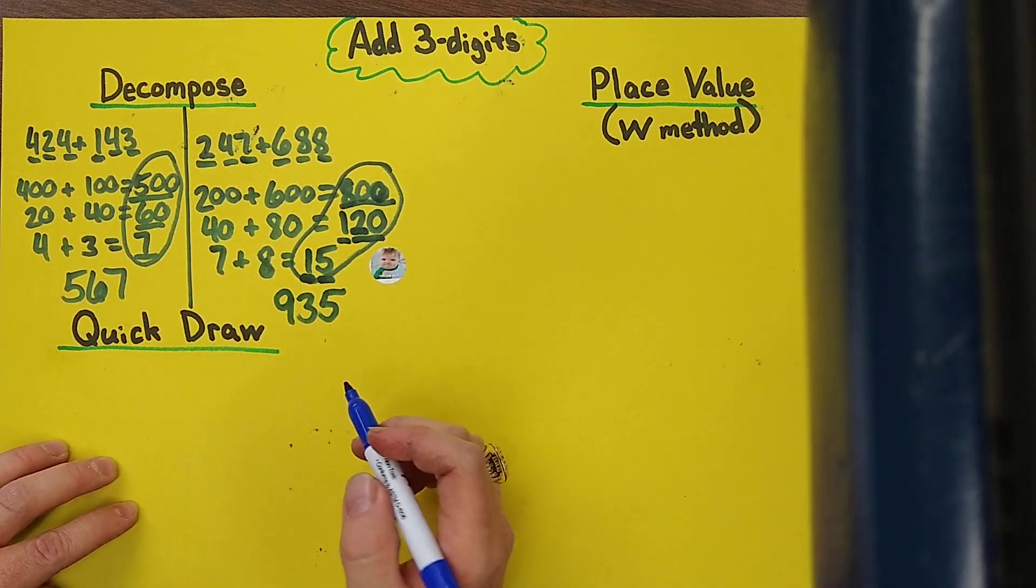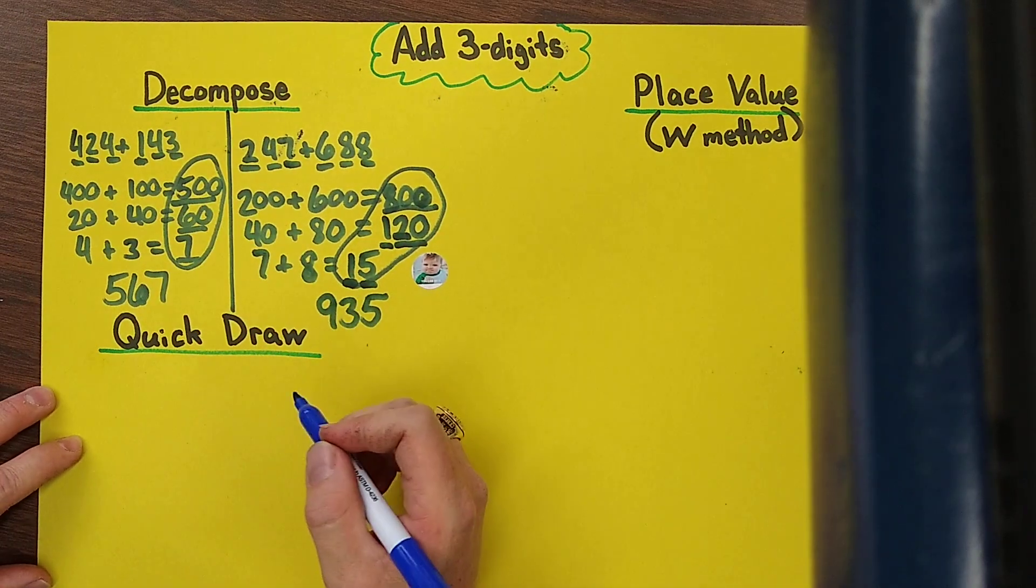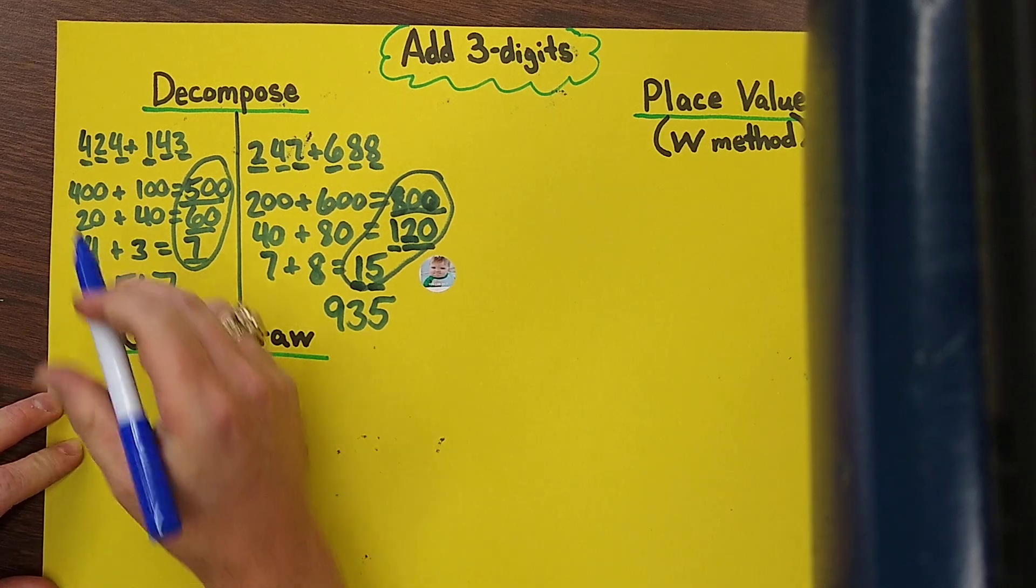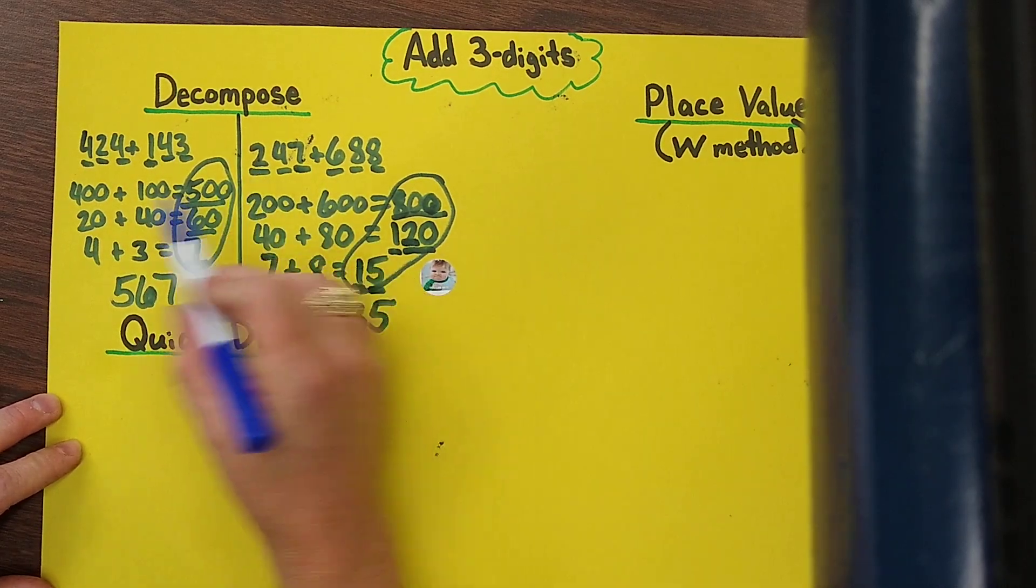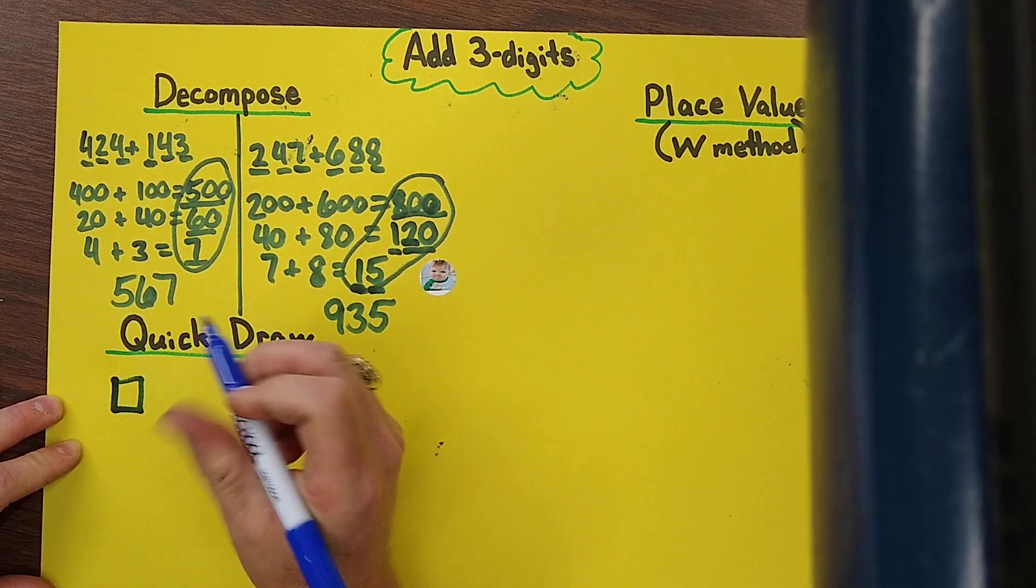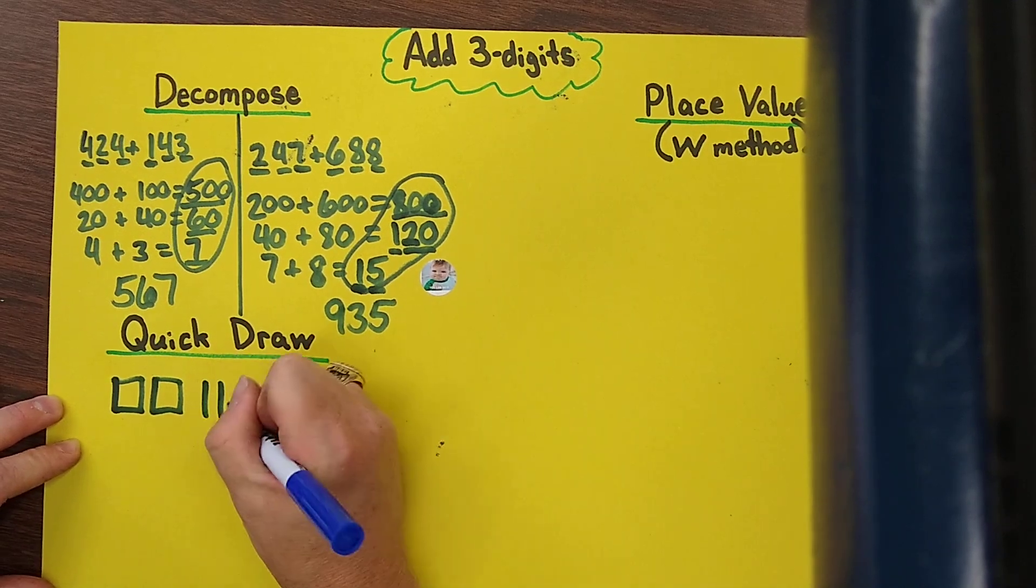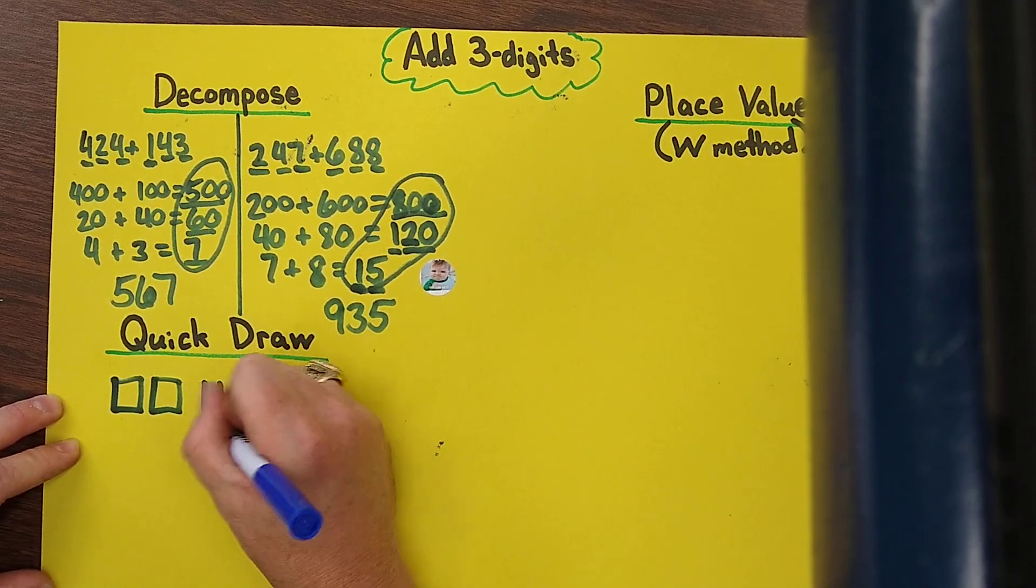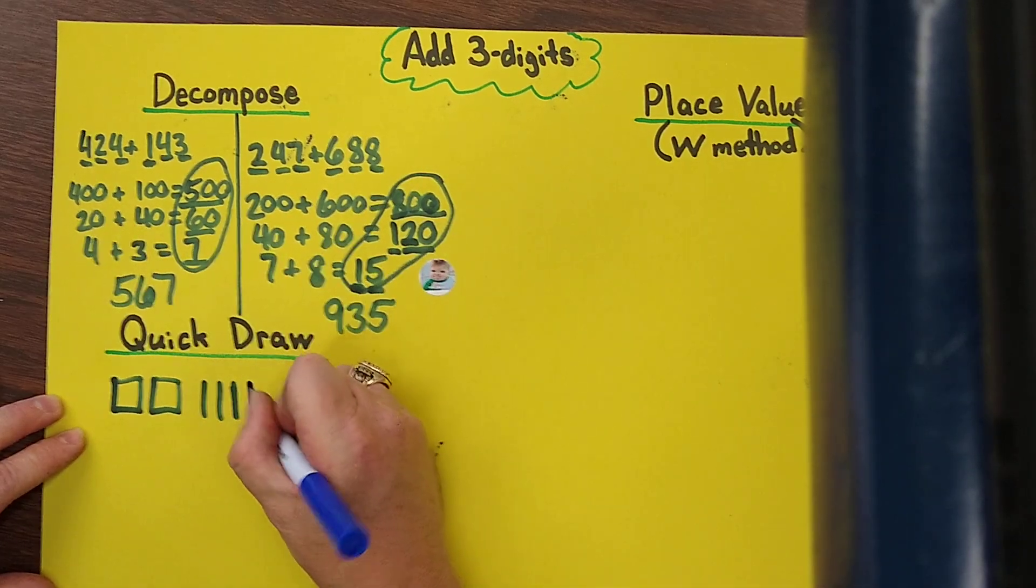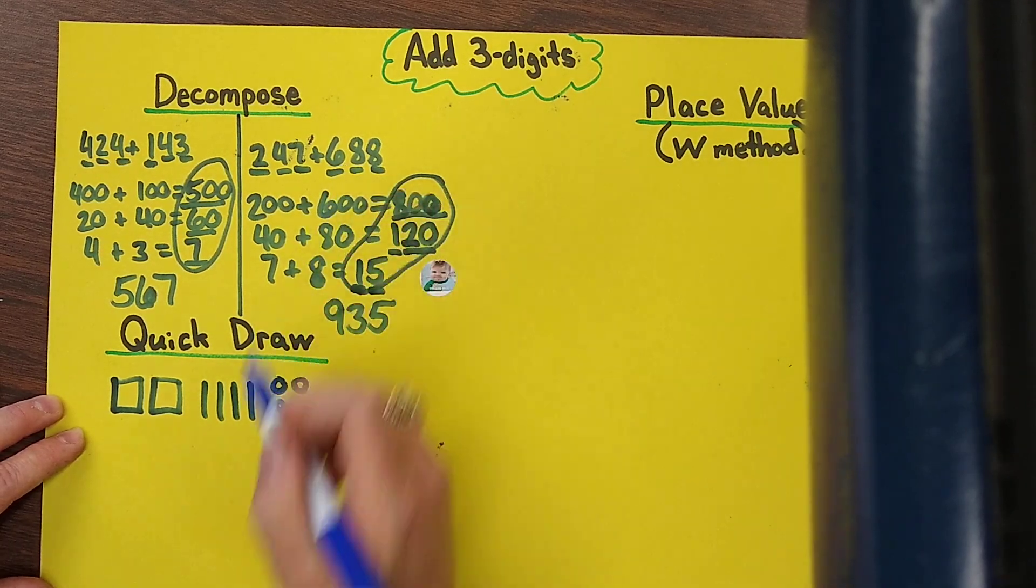Now quick draw takes a little more time but sometimes if that works for us we'll use it. So I'll go ahead and use our example, let's go with the one where we had to regroup since it's a little bit tougher. So 247: I'm going to draw my squares for my hundreds, I'm going to draw my sticks as my tens, so we have 247: 10, 20, 30, 40, and then seven ones.